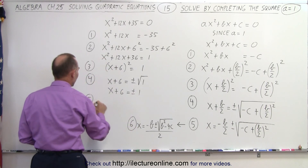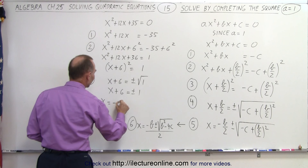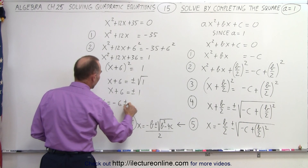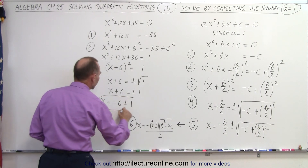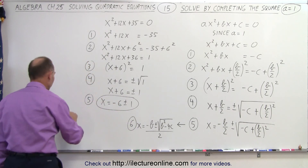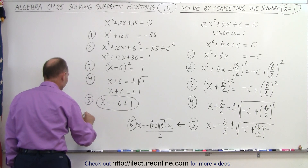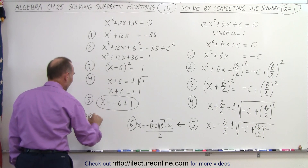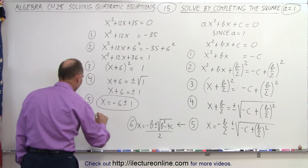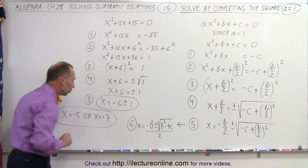Step 5: we move the 6 to the right side. A positive 6 becomes negative 6, so x equals negative 6 plus or minus 1. This gives us two possible solutions for x. Either x equals negative 6 plus 1, which is negative 5, or x equals negative 6 minus 1, which means x equals negative 7.